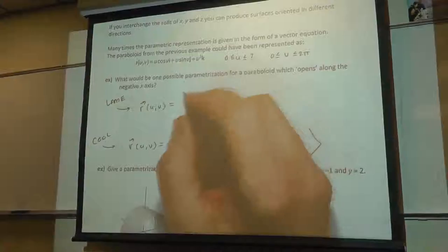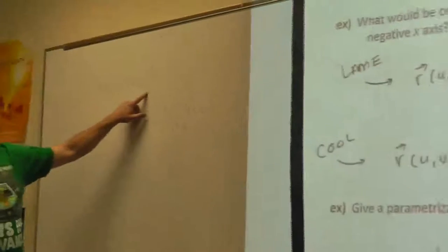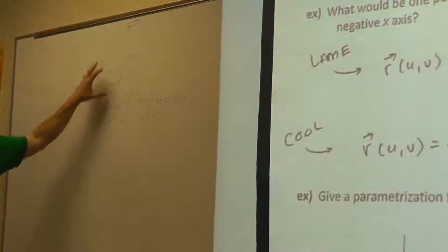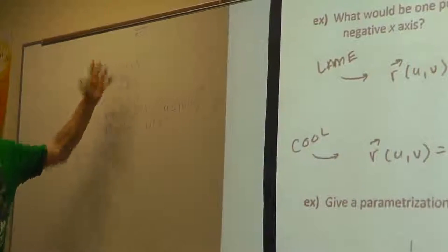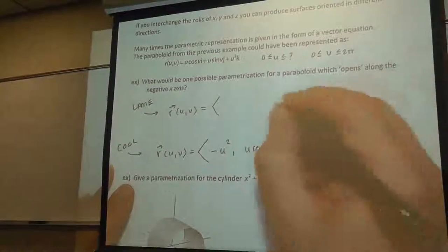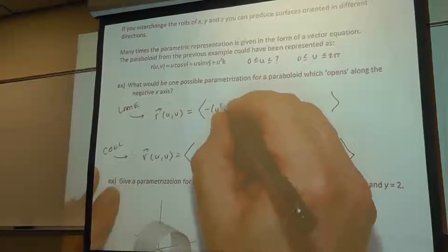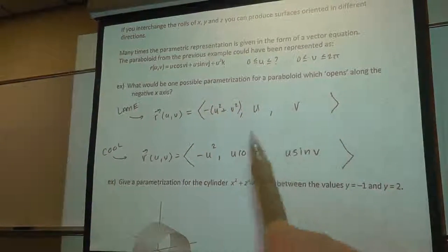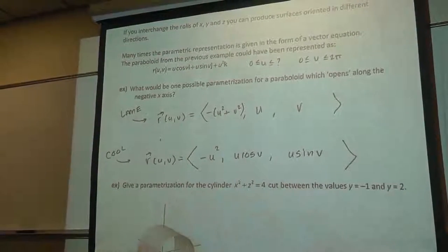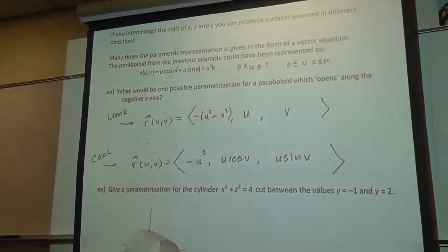The lame one is no different than the rectangular equation. You let y equal u and z equal v, and that defaults by substitution: x equals negative u squared plus v squared. So it is a separate valid parameterization — y equal u, z equal v — and that still gives you a paraboloid opening in the negative x-axis direction. It's just that in some cases, using the cosine and sine polar version of a parameterization is a bit more convenient, especially when you get to surface area.